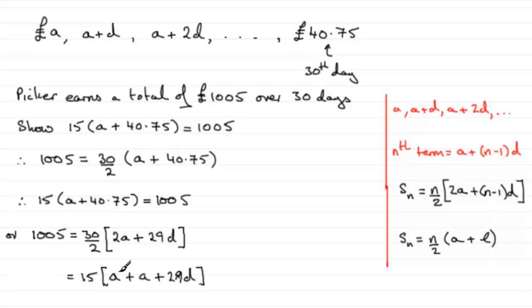So what I can write in here is that this is equal to 15 bracket A plus, and that part was 40.75. So we've got 40.75.